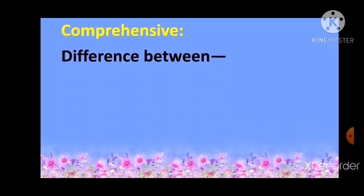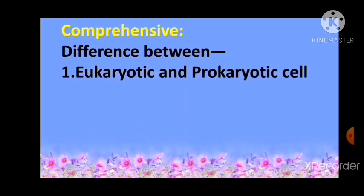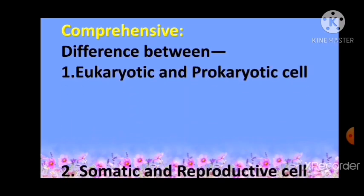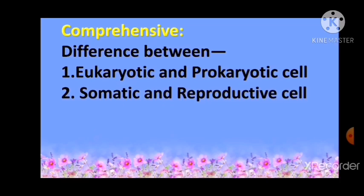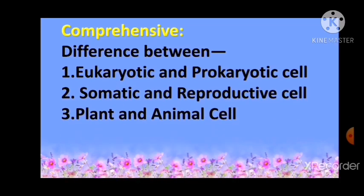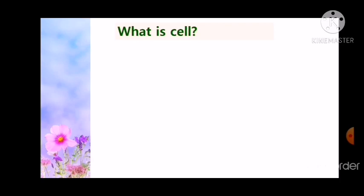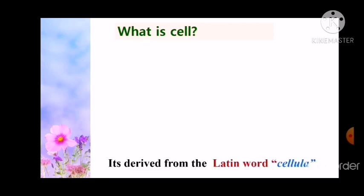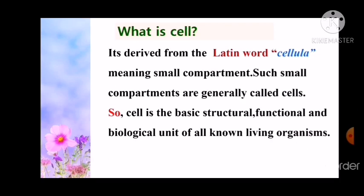Comprehensive-based questions include: difference between eukaryotic and prokaryotic cell, somatic and reproductive cell, and plant and animal cell. So, what is a cell? It is derived from the Latin word cellula, meaning small compartment. Such small compartments are generally called cells. Cell is the basic structural, functional, and biological unit of all known living organisms.